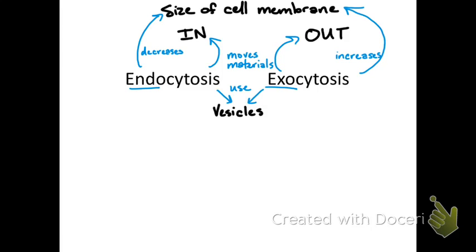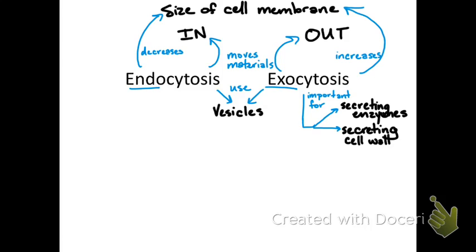There is only one term for exocytosis. Exocytosis helps secrete enzymes — sometimes those enzymes are hormones — it could also secrete hormones directly, secrete the cell wall (carbohydrates added especially to the primary and secondary cell wall, especially the secondary), and it can dump undigested materials, like secondary lysosomes with undigested cell bits. It can expel that waste. So this is a good way for the cell to get rid of waste.